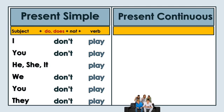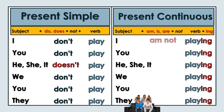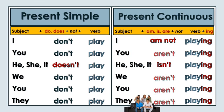Negative forms. Present Simple: don't play, doesn't play. Present Continuous: am not playing, aren't playing.